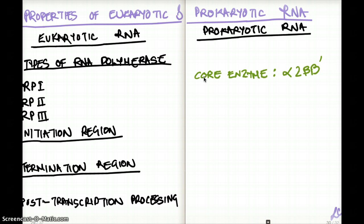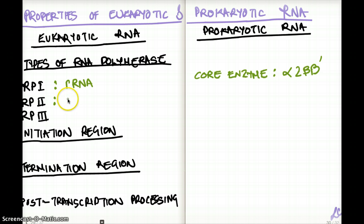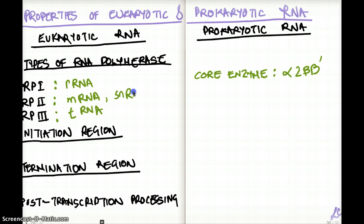This is not the case for eukaryotes. We have three different types of RNA polymerase. RNA polymerase-1 makes rRNA. RNA polymerase-2 makes mRNA, and also snRNA. RNA polymerase-3 makes tRNA.